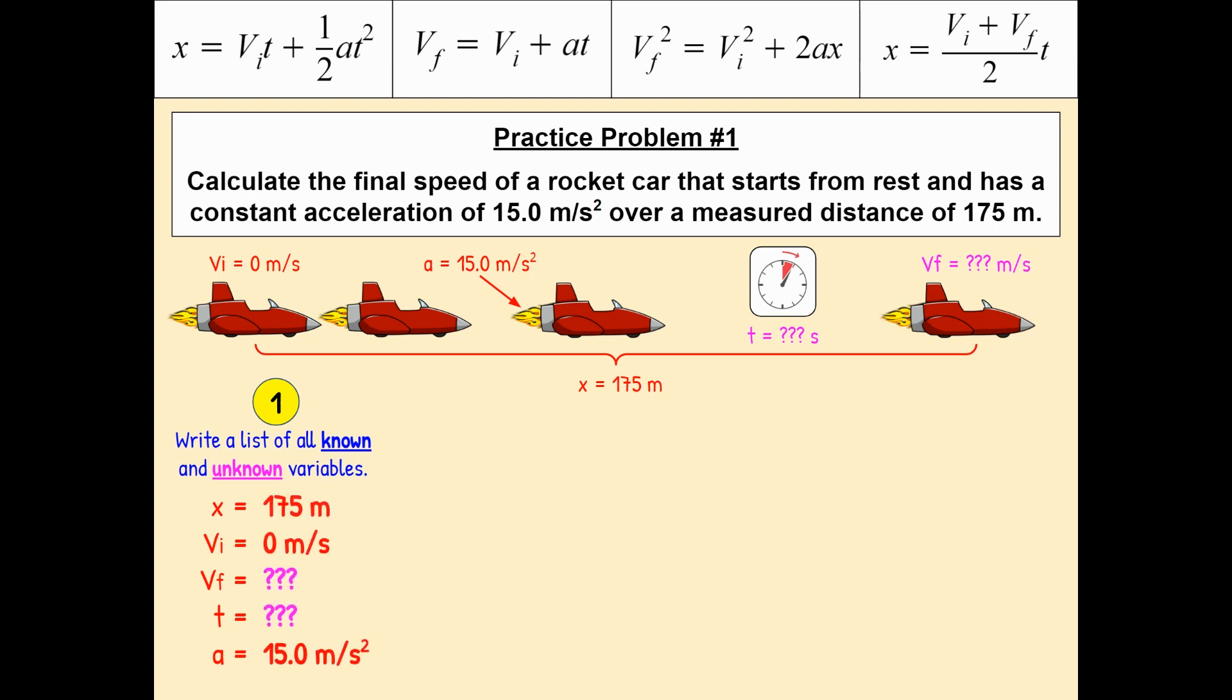Here's what I know. I know that the displacement of the rocket car is 175 meters. I know that the initial velocity of the rocket car was 0 meters per second. I don't know how fast it's going at the end, so I just put a bunch of question marks for VF. And I also don't know how much time this process took, so I just put a bunch of question marks again. But I do happen to know the acceleration of the rocket car, the rate at which it's speeding up, and that's 15 meters per second squared.